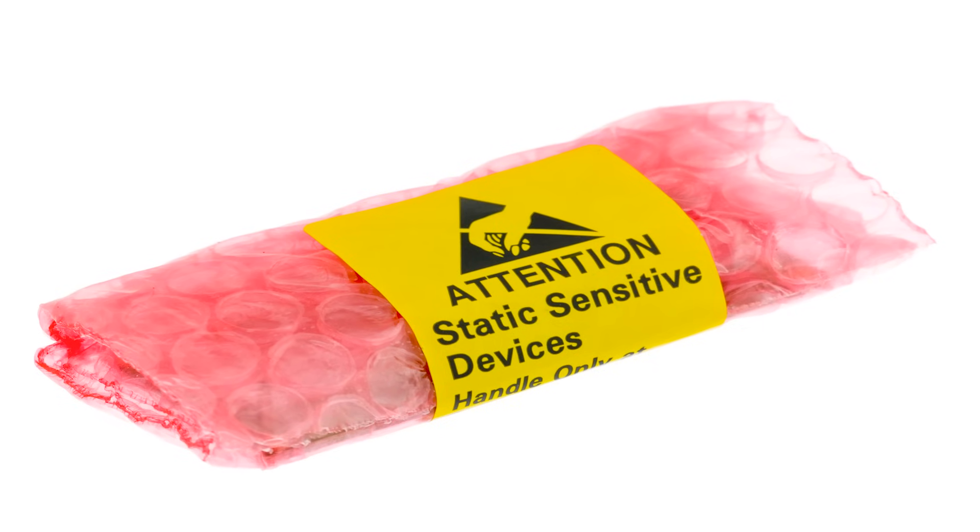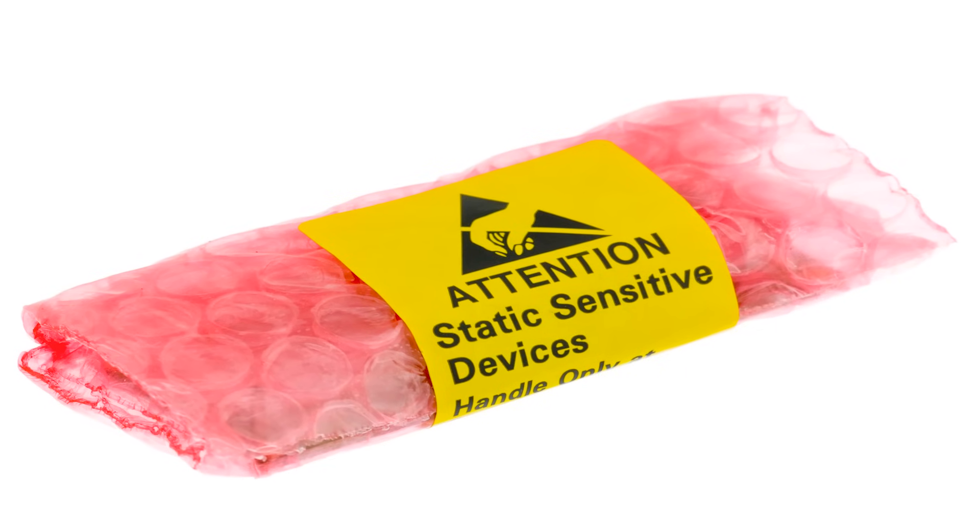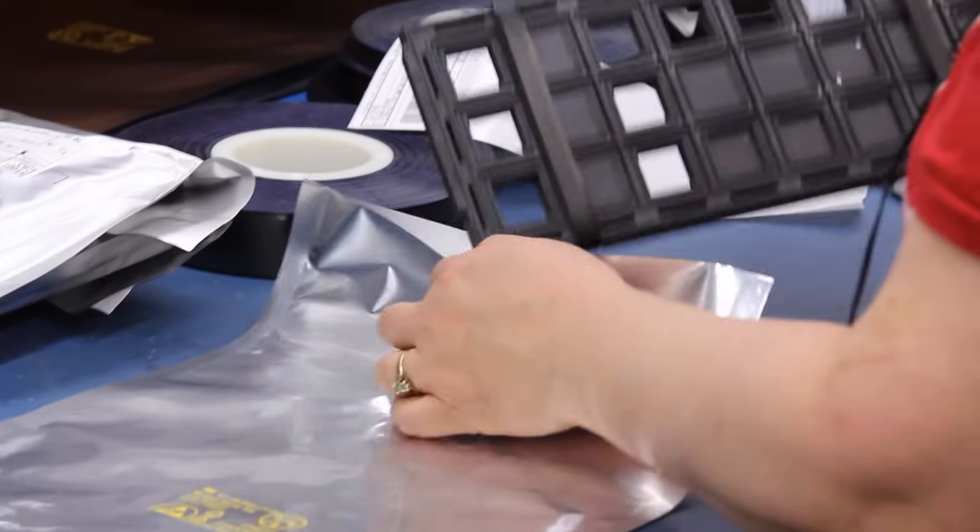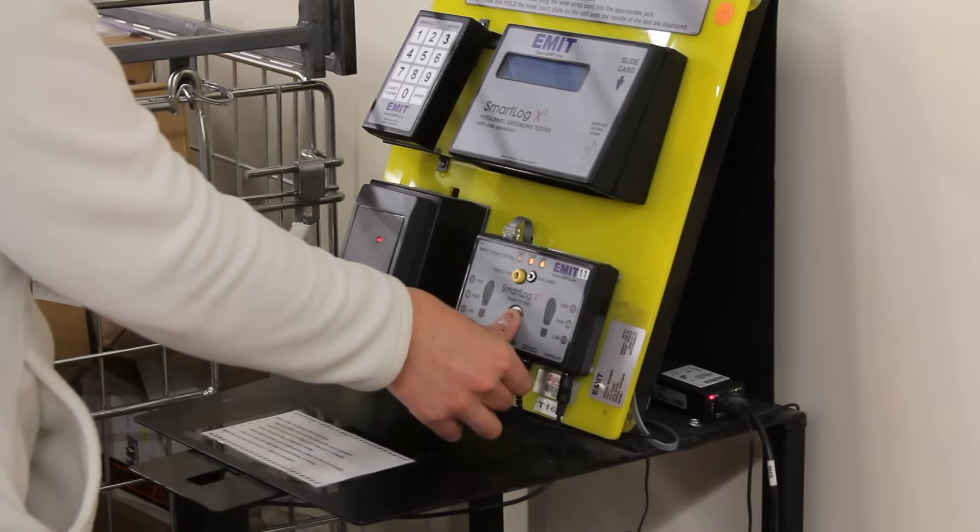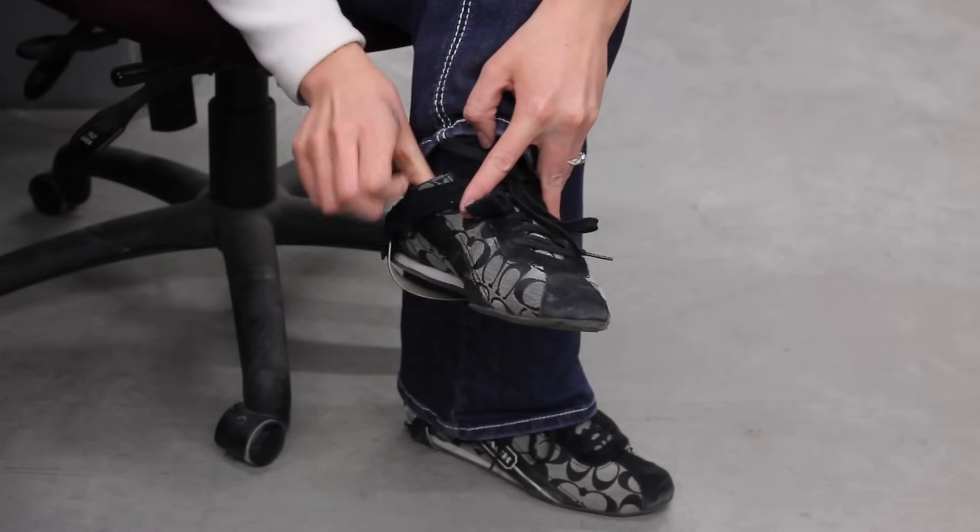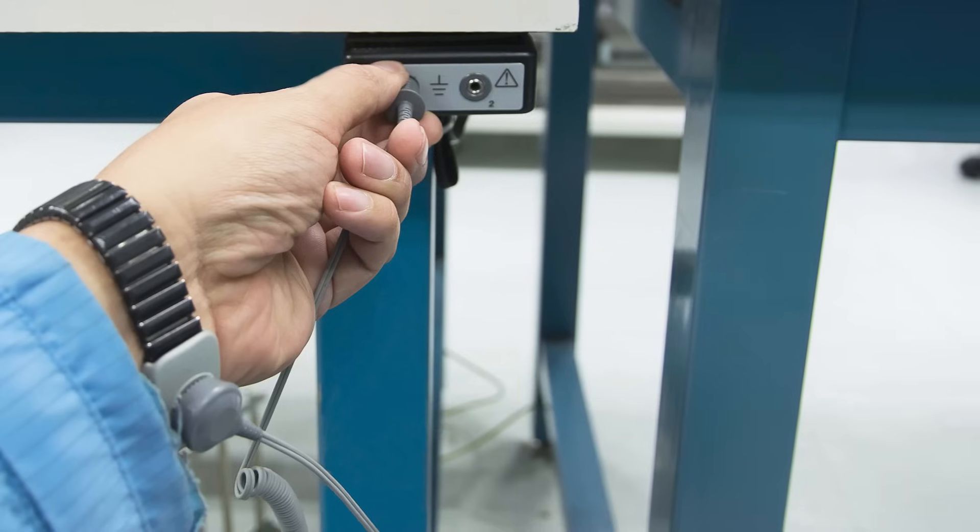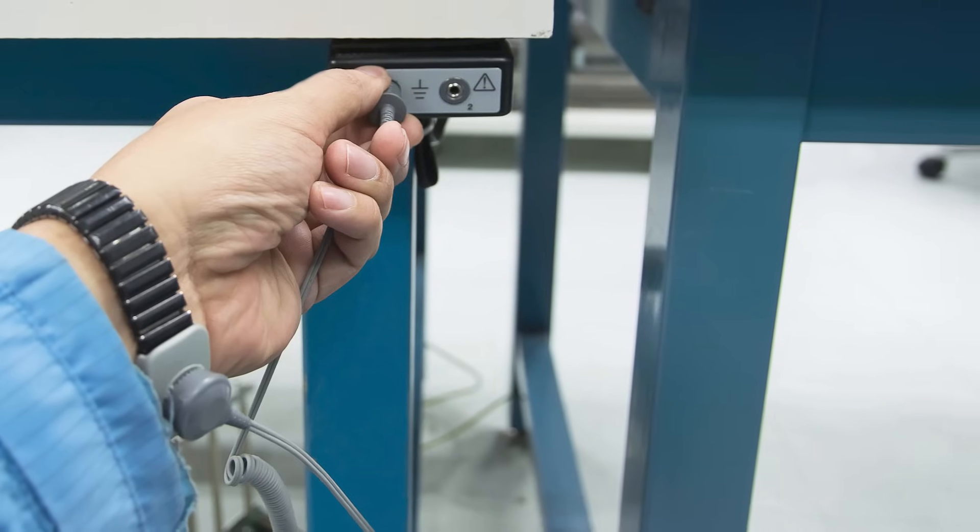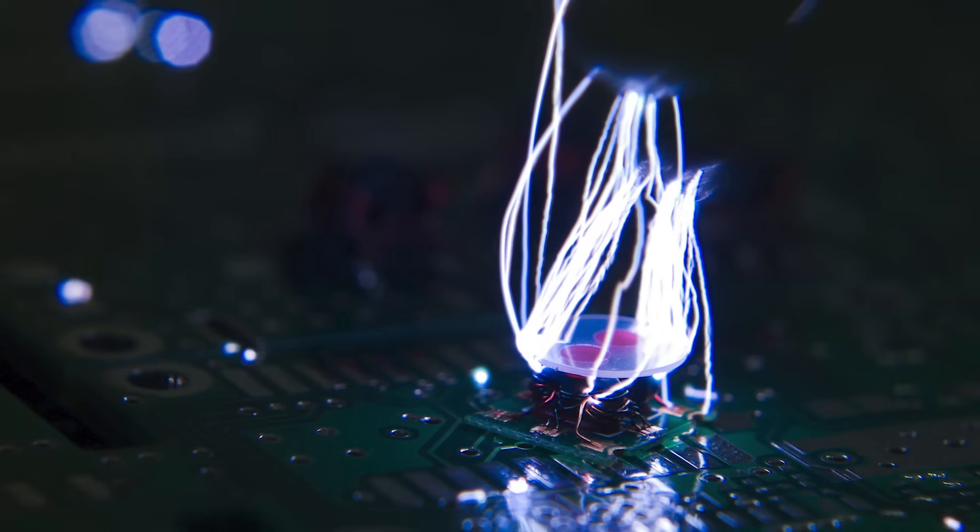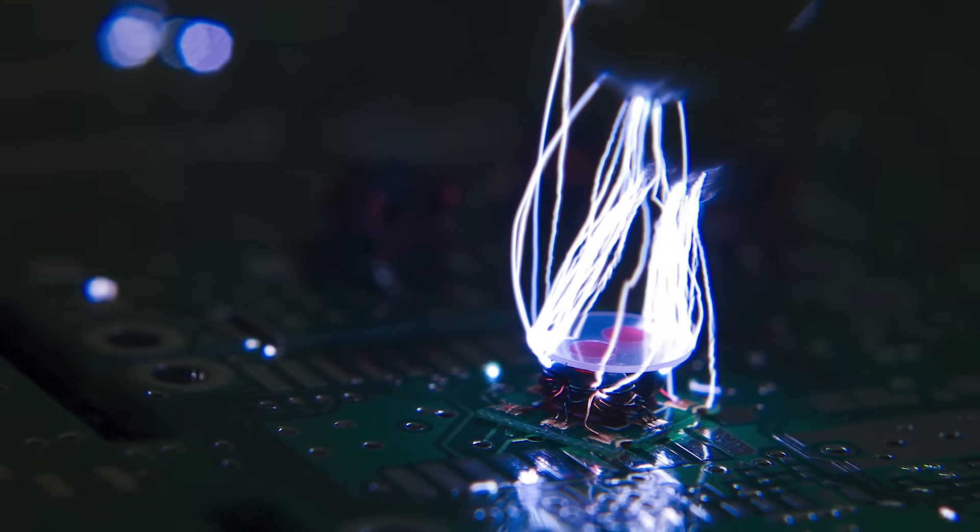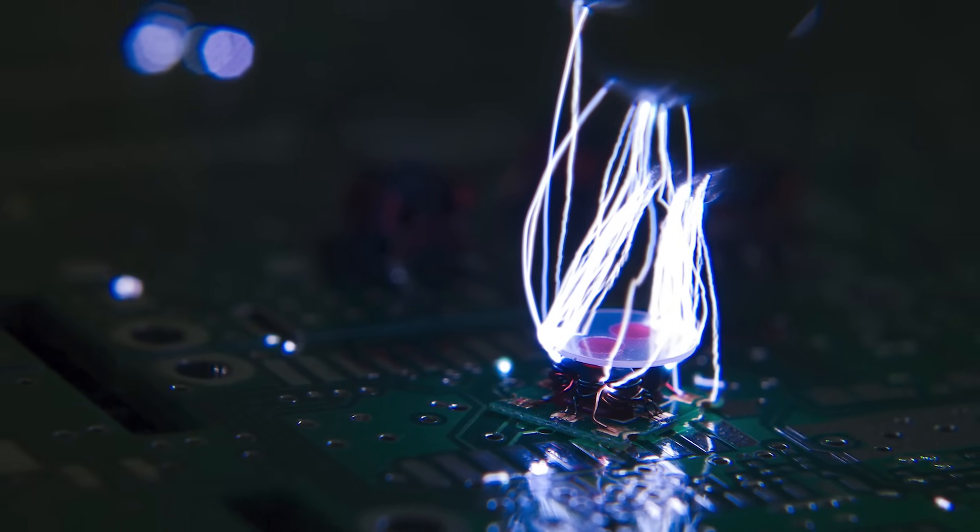Taking proper precautions such as transporting sensitive devices in sealed ESD-protective materials, bonding or electrically connecting all conductors, humans included, in an environment to the same potential as the device or assembly, and removing any unnecessary items from ESD-sensitive workstations that could cause an ESD event will all help keep your sensitive devices safe.